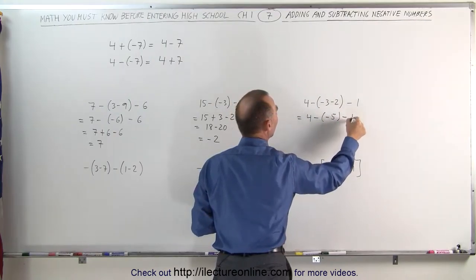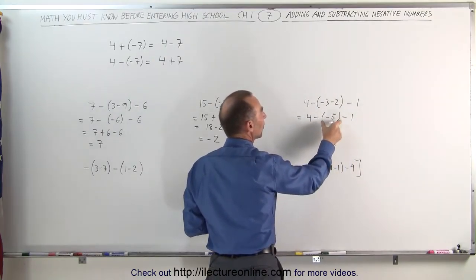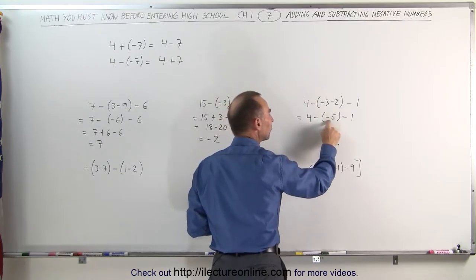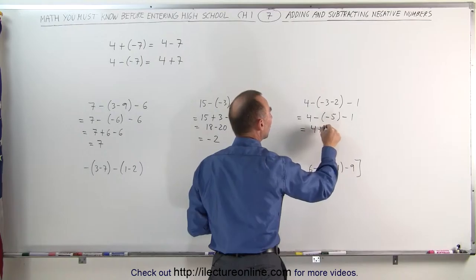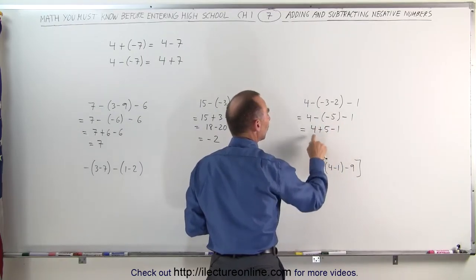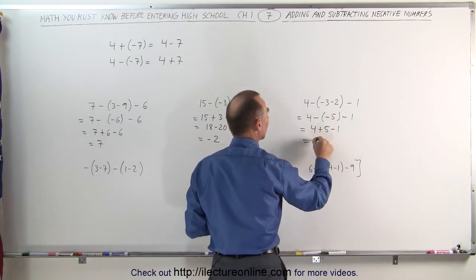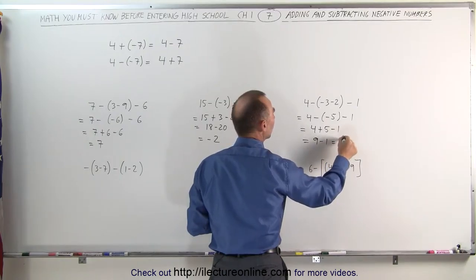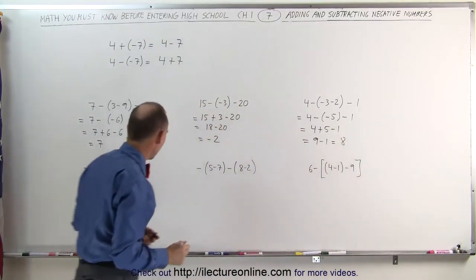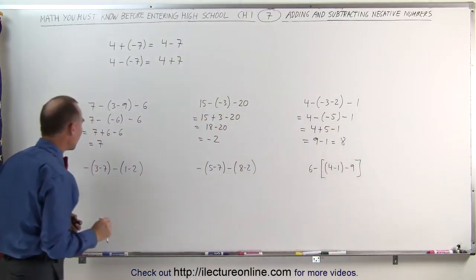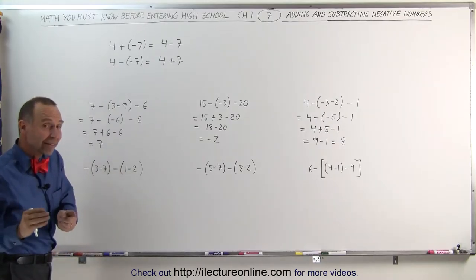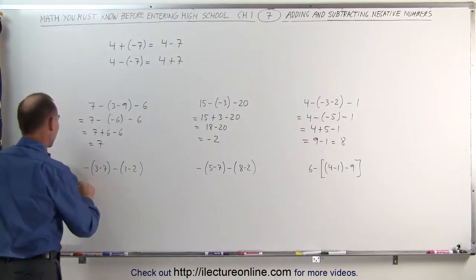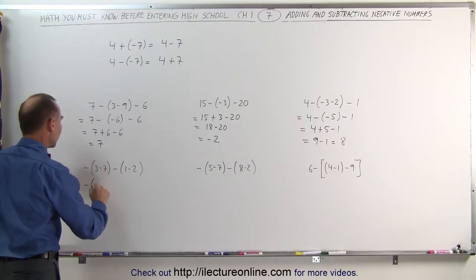Our next example: we work out what's inside the parentheses first. Minus 3 minus 2 becomes minus 5. So this can be written as 4 minus a minus 5, minus 1. Now we get rid of the parentheses — remember that subtracting a negative number is the same as adding its opposite. This becomes 4 plus 5 minus 1. 4 plus 5 is 9, that becomes 9 minus 1, which is equal to 8.